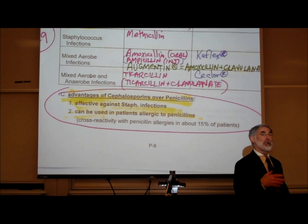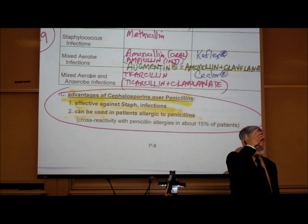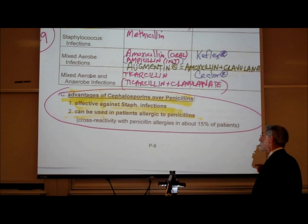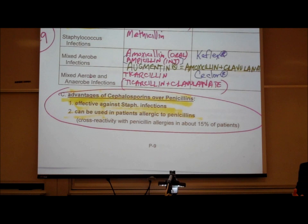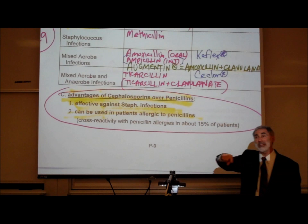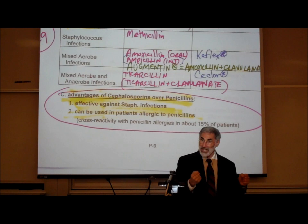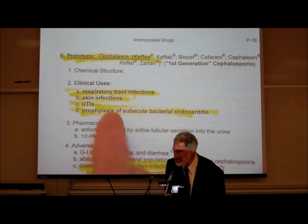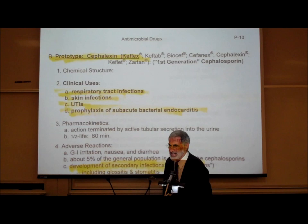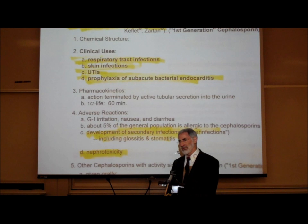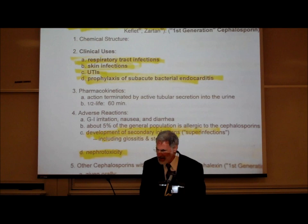The second advantage: penicillins are among the most allergenic of all drugs — about 8% of the U.S. population is allergic to penicillin. Very few people are allergic to cephalosporins. Only 15% of those allergic to penicillin are also allergic to a cephalosporin, meaning 85% can tolerate cephalosporins fine. Cephalexin — brand name Keflex — is commonly given for respiratory tract infections, skin infections, UTIs, and as an alternative to penicillin for prophylaxis against bacterial endocarditis related to rheumatic heart disease.